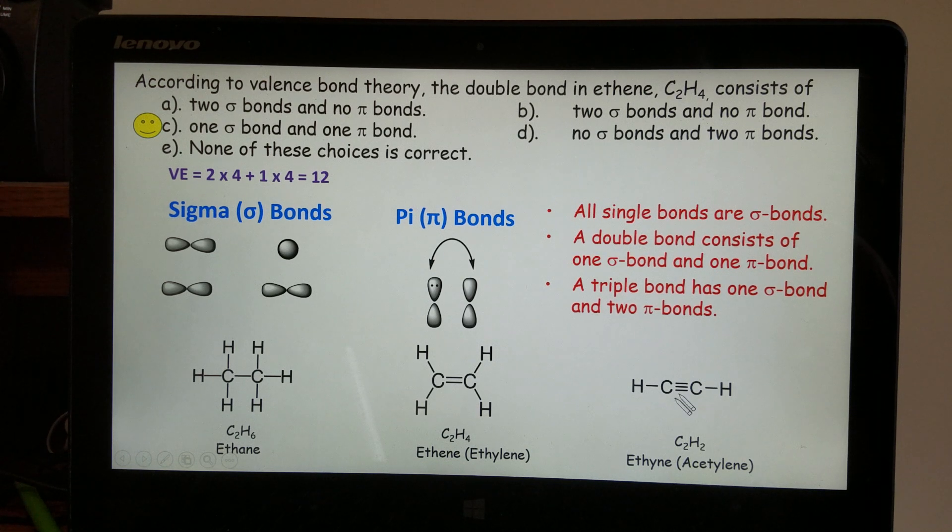Here in acetylene, there should be, for the molecule, one, two, and then another one, three sigma bonds, and then two pi bonds.